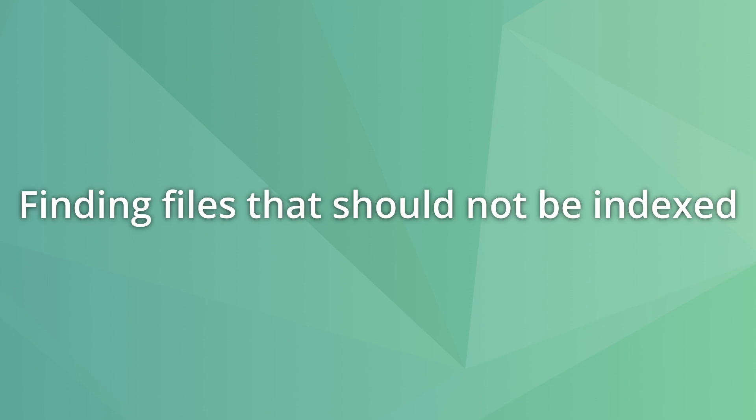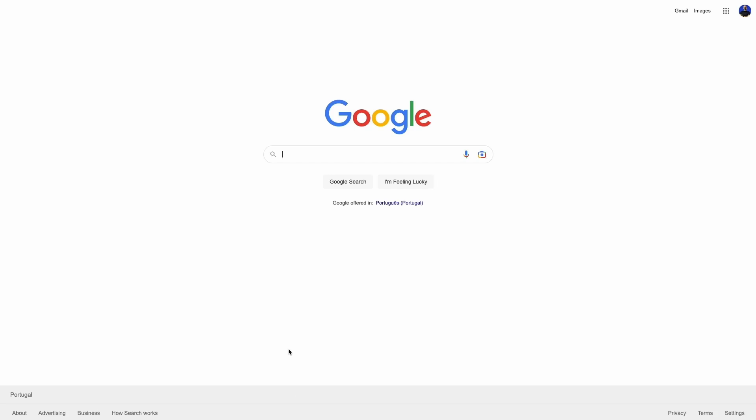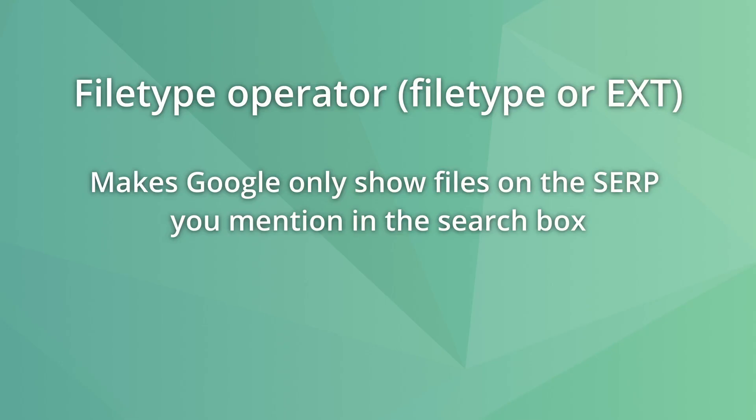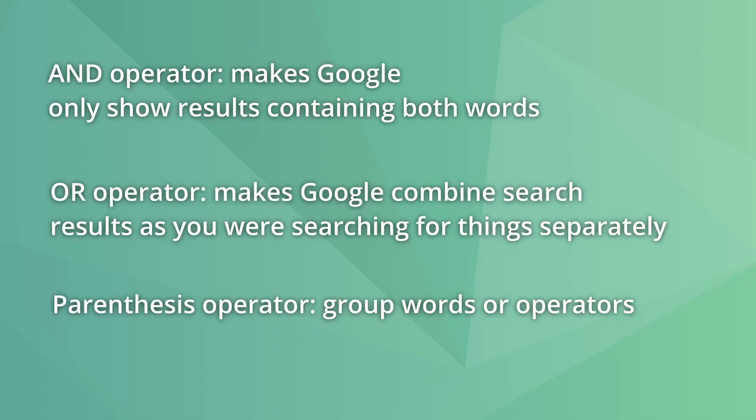When a website grows, it may become increasingly harder to control what URLs Google indexes. This could make files that should not be indexed appear in search results. To know if Google is indexing files from your site, use the query: site:domain filetype:operator. The filetype operator makes Google only show files of the type mentioned in the search box. If you want to search for several types of files at once, you can combine them using the OR and parentheses operators.